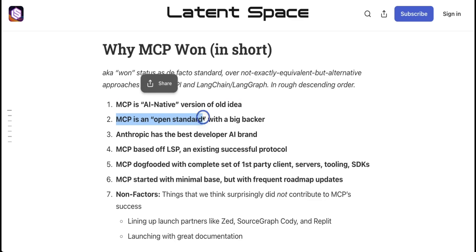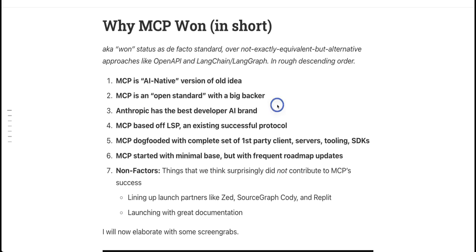MCP is an open standard with big backer. In this case, the backer is Anthropic and Anthropic has been actually making updates to it. It's also good to see that now companies like OpenAI and even Google are thinking about adopting this standard. Anthropic has the best developer AI brand. I totally agree with it. Claude has been an awesome coding LLM if you don't run into rate limits. MCP is based off of LSP, which is language server protocol. This is an existing successful protocol. LSP standardized how to add support for programming languages across whole ecosystem of development tools. In a very similar way, MCP is just trying to standardize how to integrate additional context and tools into the ecosystem of LLM applications.